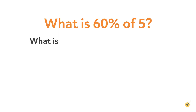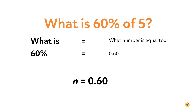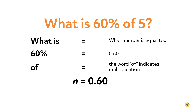The first part of the sentence, 'what is,' means what number is equal to. Since we don't know the number in question, we use the variable n to represent this portion of the equation. The next portion is 60%. Since 60% equals 0.60, write 0.60 in the equation after the equal sign. The next part is 'of,' which indicates multiplication, so write a multiplication sign after 0.60. The last portion is 5 — write 5 after the multiplication sign.